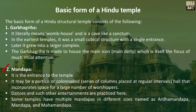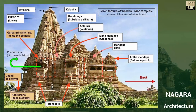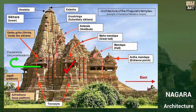Second, Mandapa. It is the entrance to the temple. It may be a portico or colonnaded series of columns placed at regular intervals — a hall that incorporates space for a large number of worshipers. Dances and such other entertainments are practiced here. Some temples have multiple Mandapas in different sizes, named as Ardhamandapa, Mandapa and Mahamandapa.